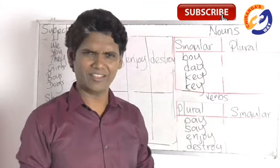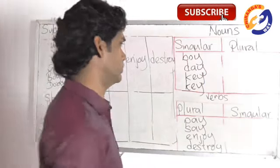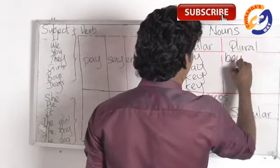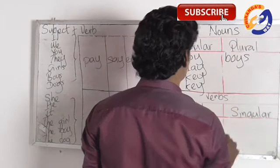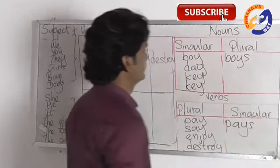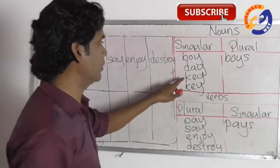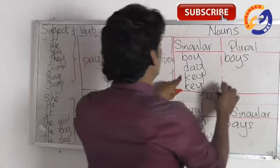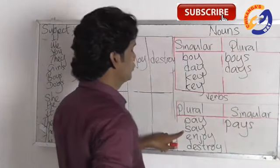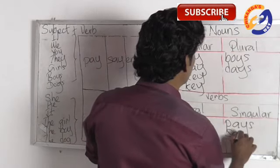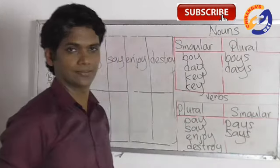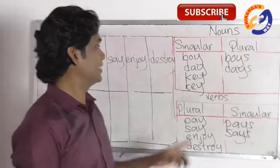Nothing to do — just as usual, we just have to add an S. To make a noun plural we are just adding S; for a verb in third person singular we are also just adding S.